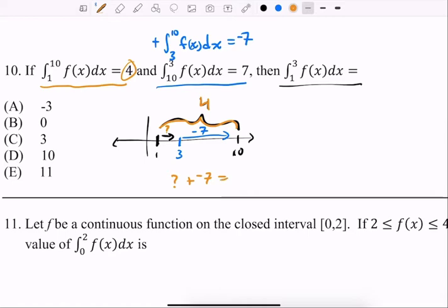Okay, what would 1 to 3 be? So question mark plus negative 7 equals 4. What would that be? What would that question mark be? Oh, you just have to add 7 to both sides, right? And so the question mark would be 13, no 11.